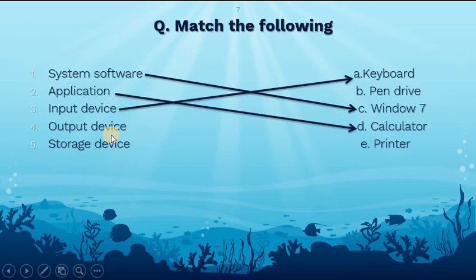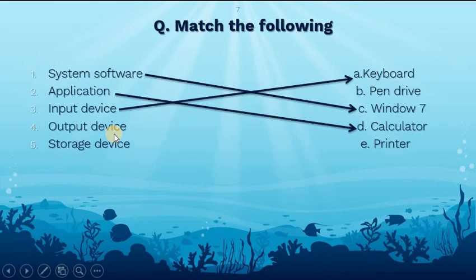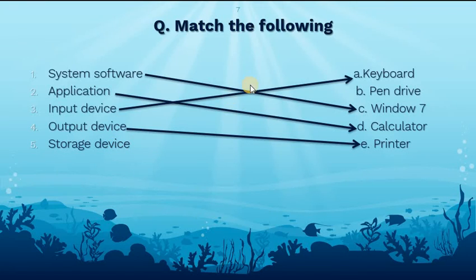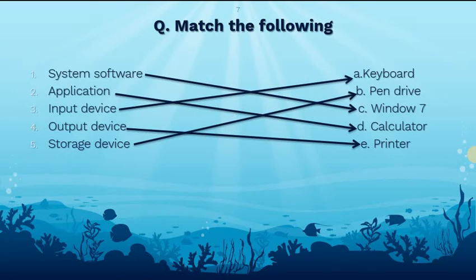The fourth match is output device — the opposite of input. For example, after typing numbers, the device that gives output is the printer. The printer prints what we have written on the computer. The fifth match is storage device — the pen drive. We can store pictures, images, movies, songs, school data, and contact numbers on a pen drive.